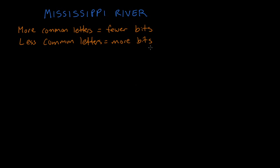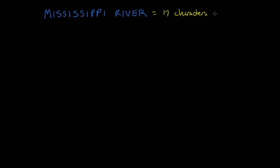Let's use this phrase, Mississippi River. Now this one has 17 characters. If we were to use the common ASCII representation of each letter, we would require 8 bits each for a total of 136 bits to send this message. Let's see if we can do better.